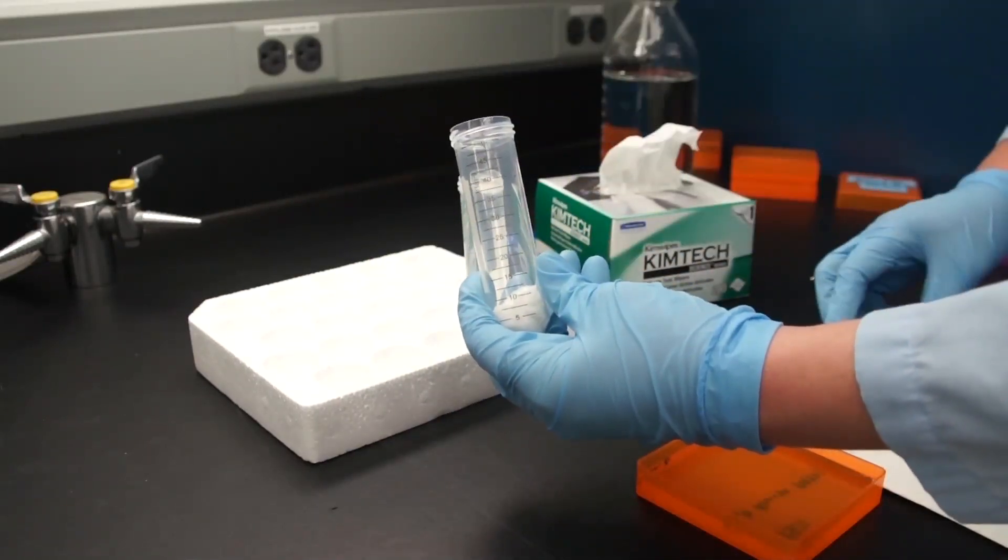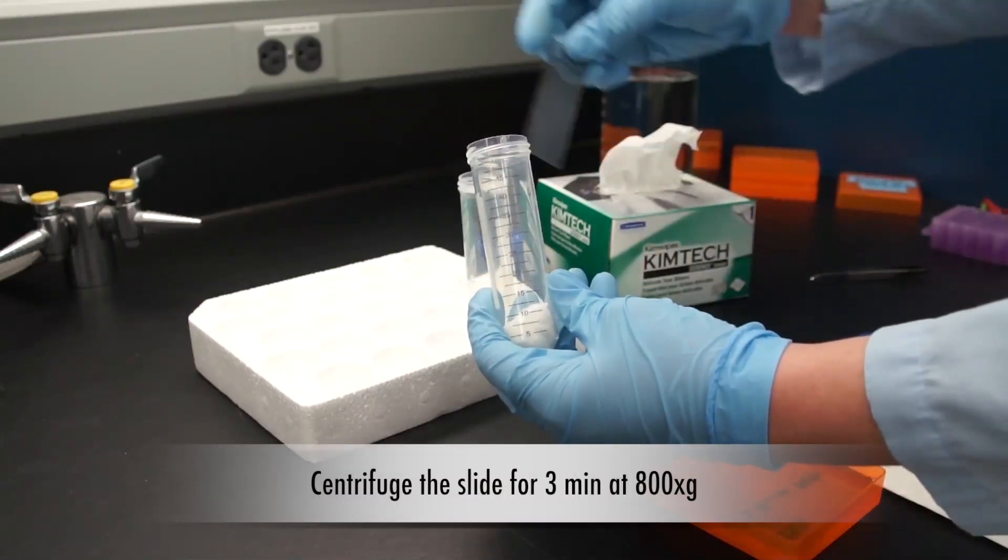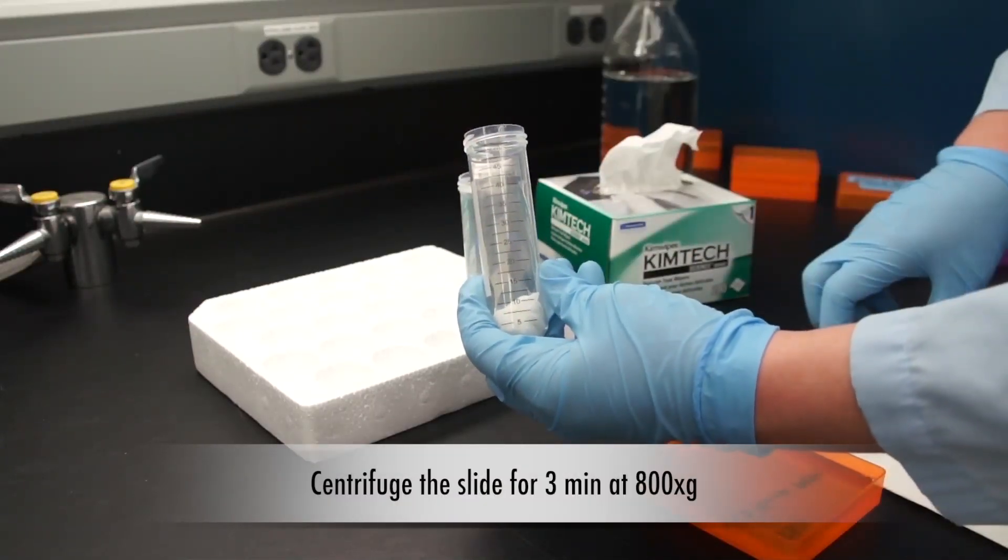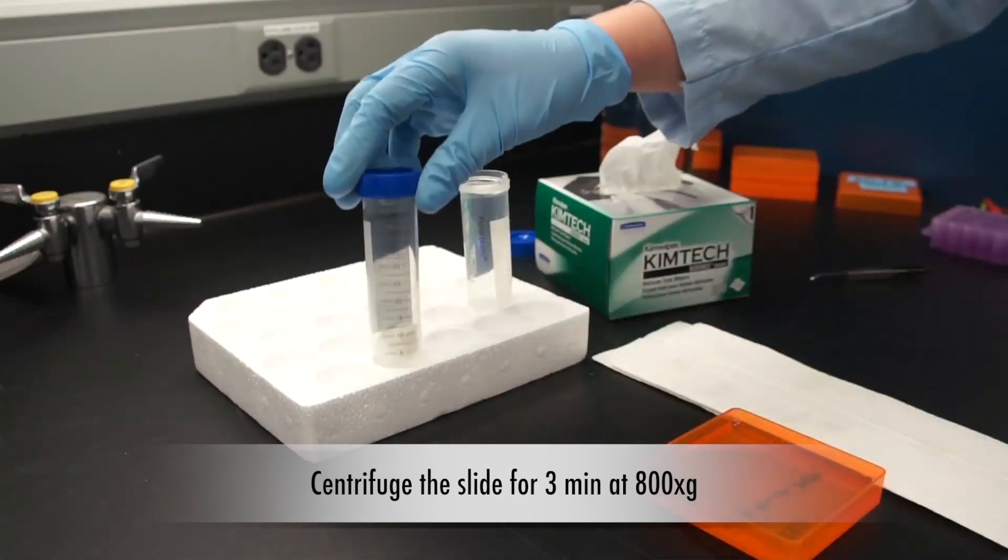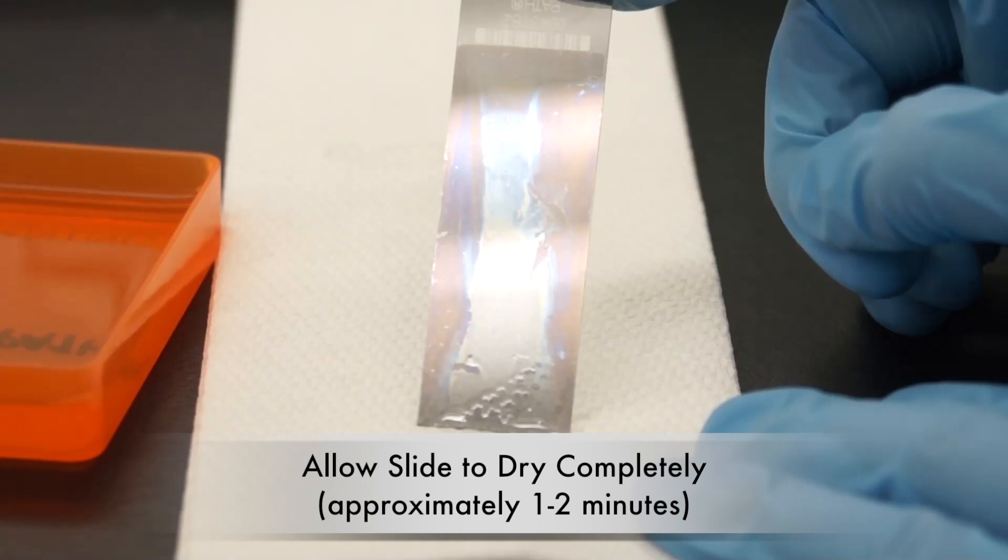Place your slide on top of the kimwipe and centrifuge it for 3 minutes at 800 times G. Allow the array to dry completely before scanning it. You will see a color change on the slide when it is dry.